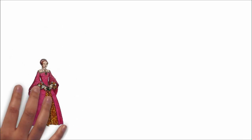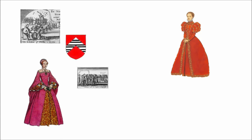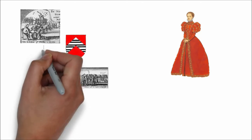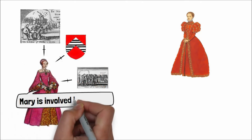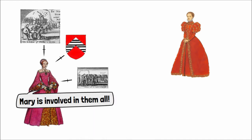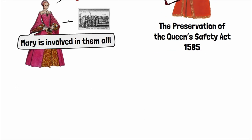So why did Elizabeth have to have Mary executed? Mary had been involved to a lesser or greater extent in several plots against Elizabeth, including the revolt of the Northern Earls, the Throckmorton plot, and the Babington plot. Walsingham's spies had discovered evidence of Mary's involvement in the plots and this forced Elizabeth to hold a trial. Mary was accused and found guilty under the Preservation of the Queen's Safety Act.